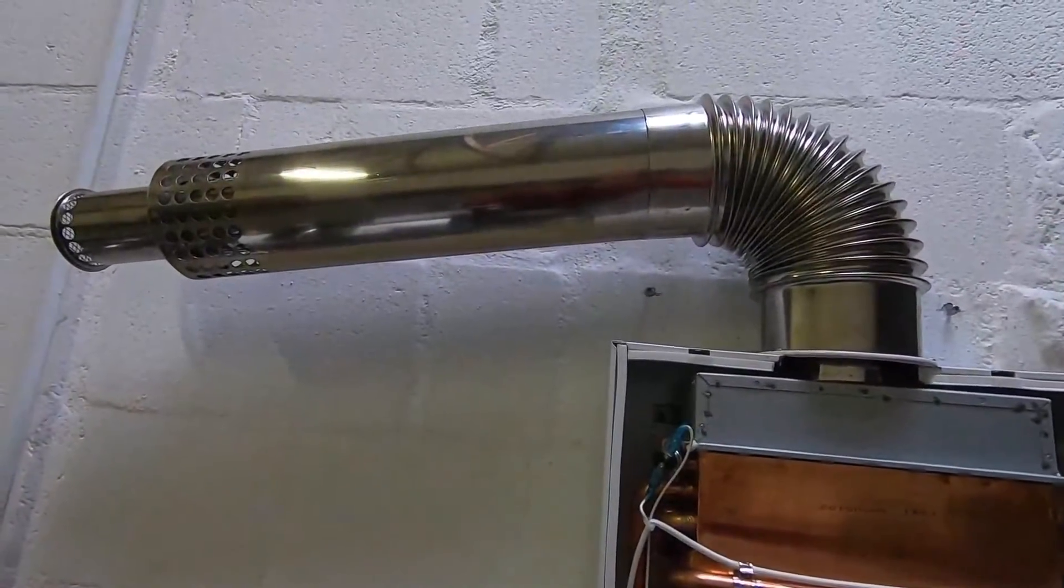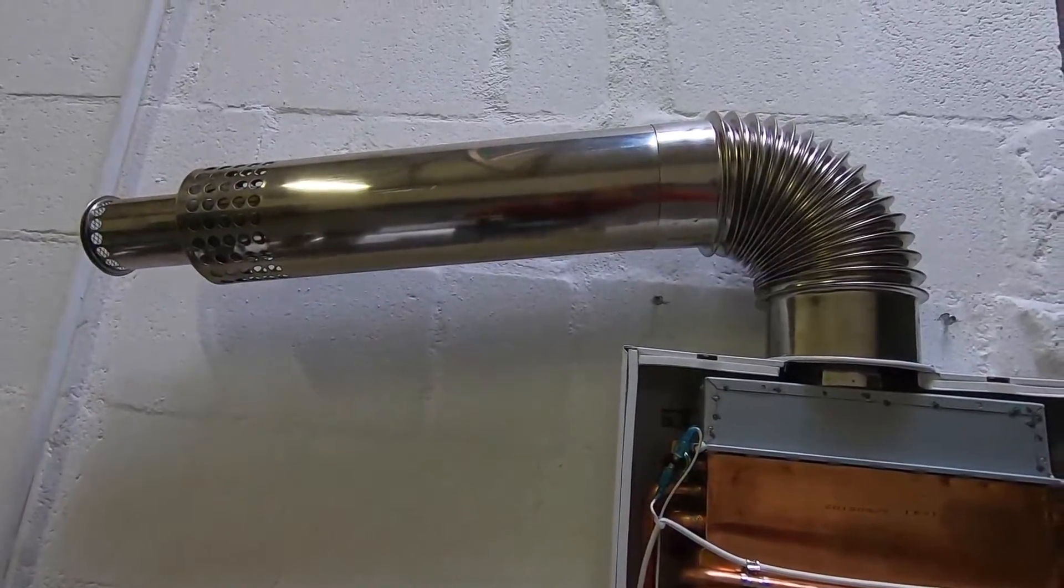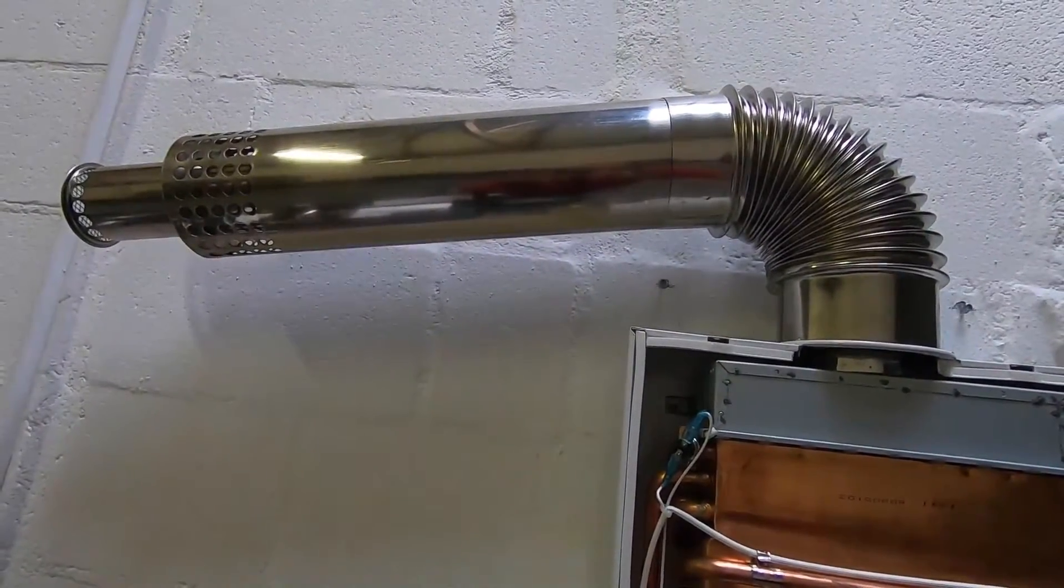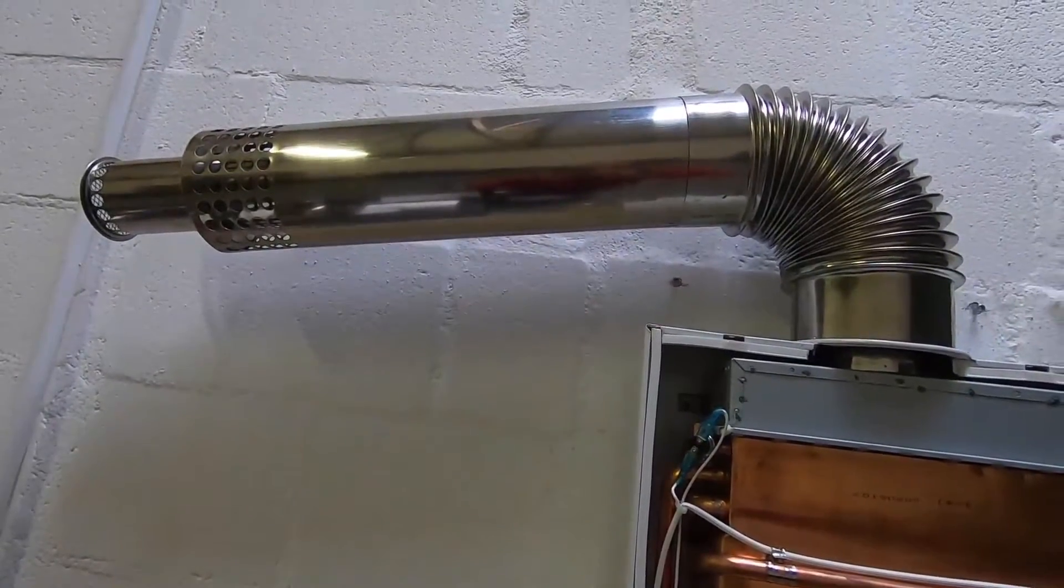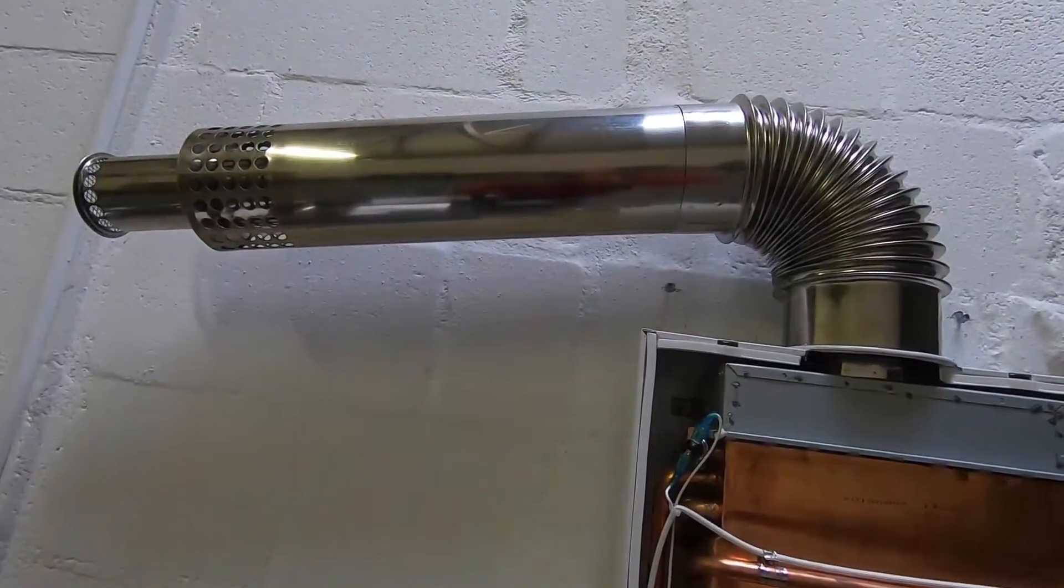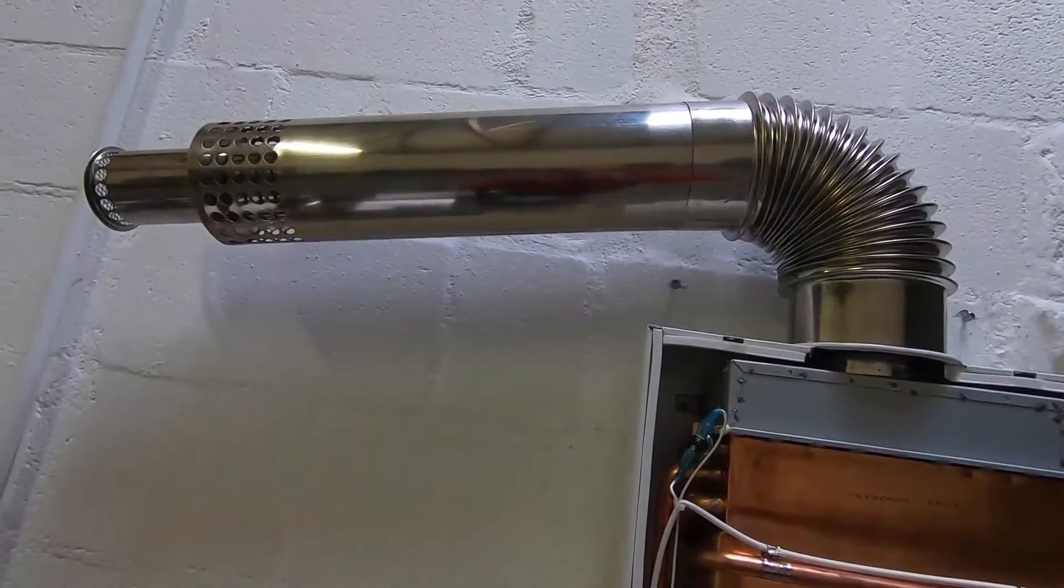You will notice that the flue has a slight downward pitch and this is to prevent any condensation from dripping back into the geyser. The condensation is caused by the difference in temperature between the inner flue and the outer flue.